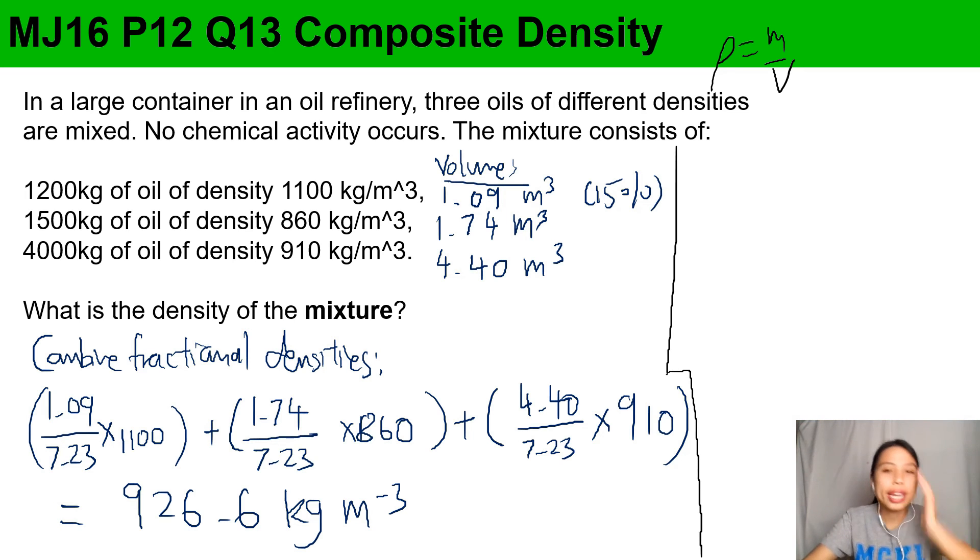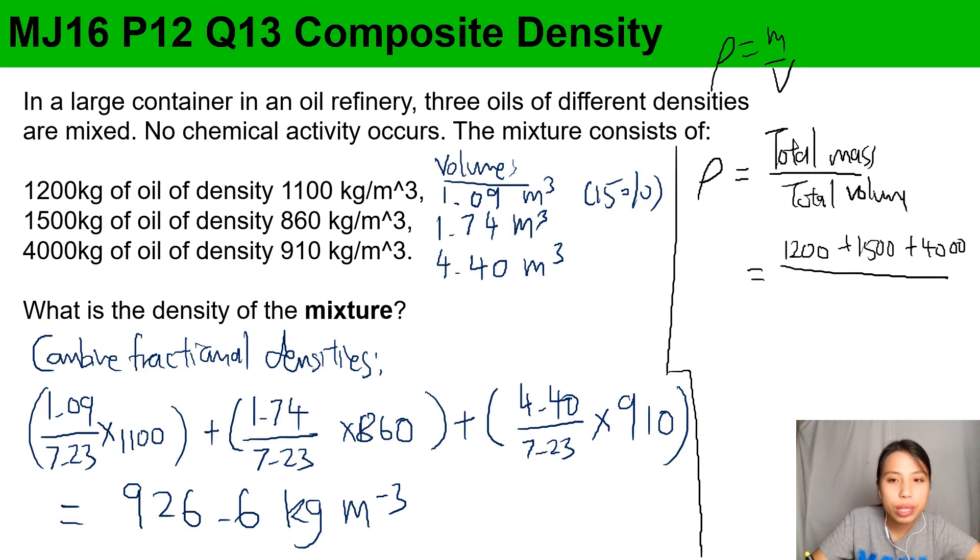Some of you say oh this one very long, got another shorter way? Yes, there's another way to do it. Depending on what info the question gives you, you can choose either way. In this question it might be a little easier to do this: if you want to find the mixture's density, you can use total mass over total volume. So in our case we can do 1200 + 1500 + 4000 divided by the total volume, which we already calculated to be 7.23.